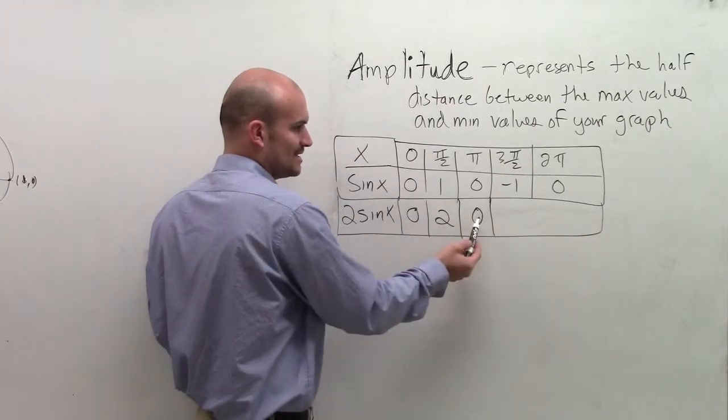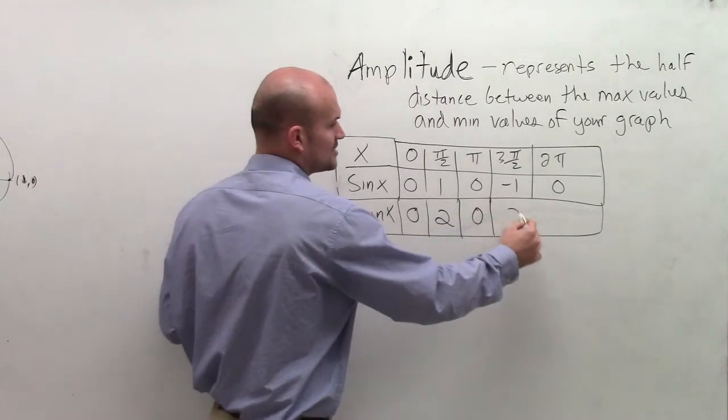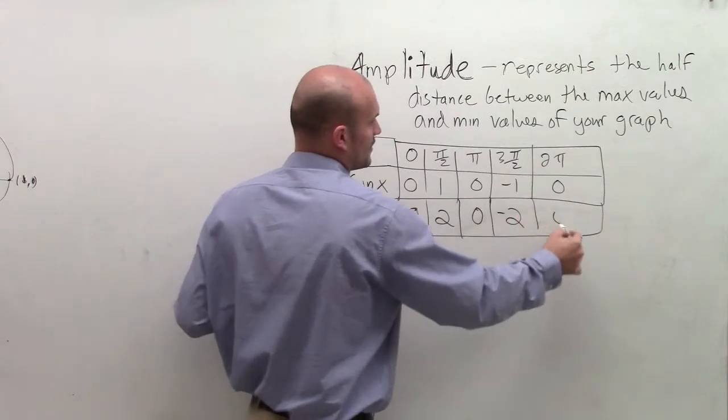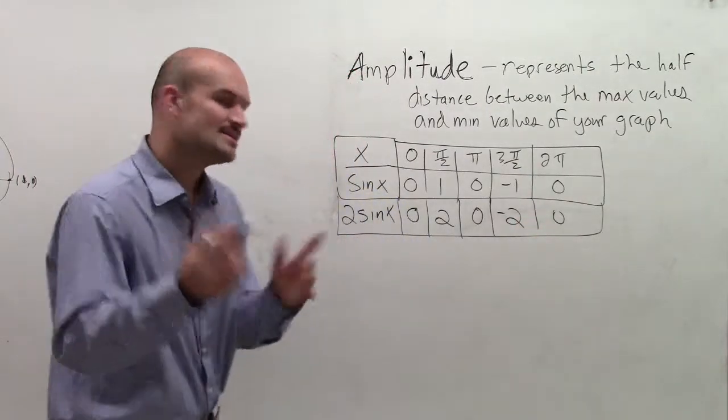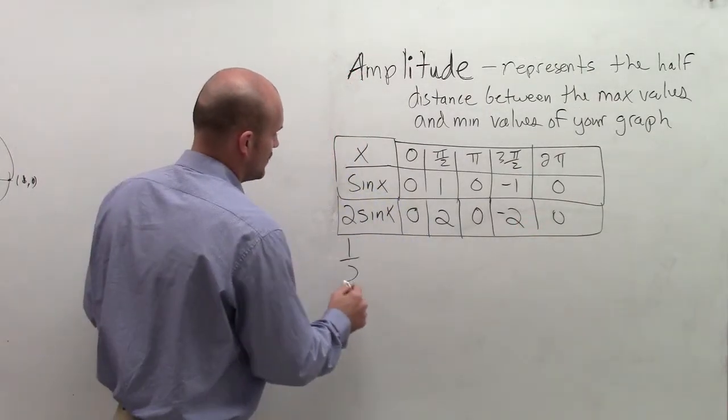Multiply by 0 again would still be 0. 2 times negative 1 gives me now negative 2, and then 0.